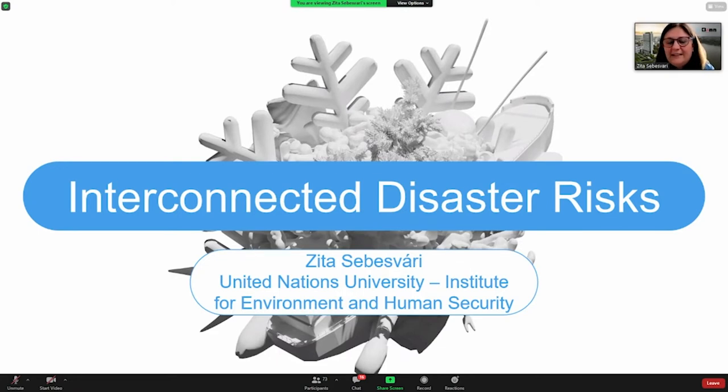It's called Interconnected Disaster Risk Report. It is a report which is designed to be an annual report. We started with it last year for the first time, and we would like to come out with it every year now.